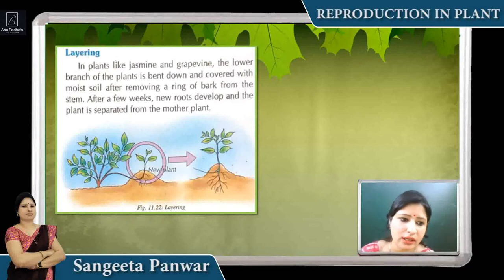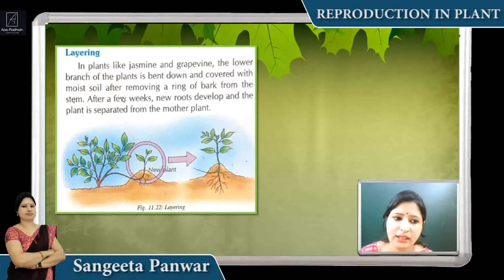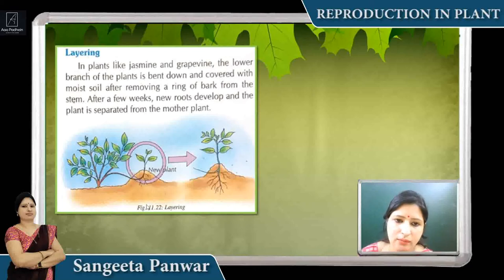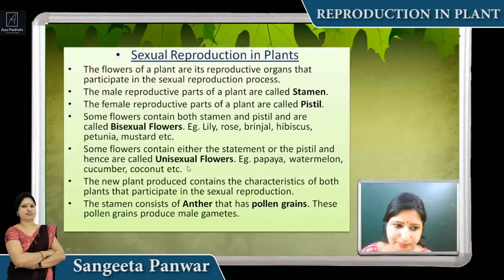In layering, as we have studied with plants like jasmine and grapevine — their lower branch is bent and mixed into the soil. Roots emerge from that point, and they develop into a new plant.